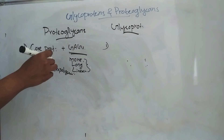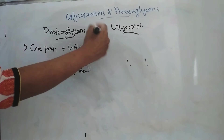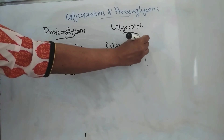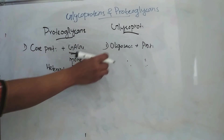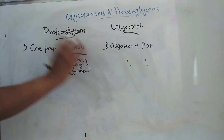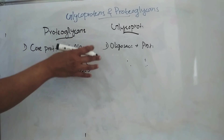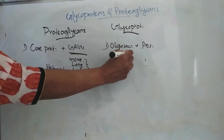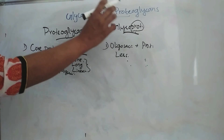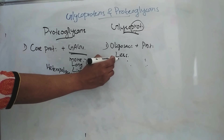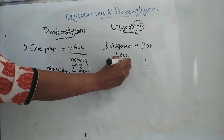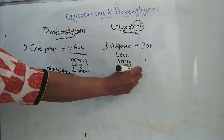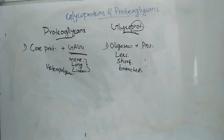In the case of glycoproteins, oligosaccharide chains are attached to proteins. The carbohydrate portion will not be a heteropolysaccharide, and this carbohydrate is less in amount because the protein part is more in glycoproteins. So carbohydrate here is less in amount and it will be short and branched.